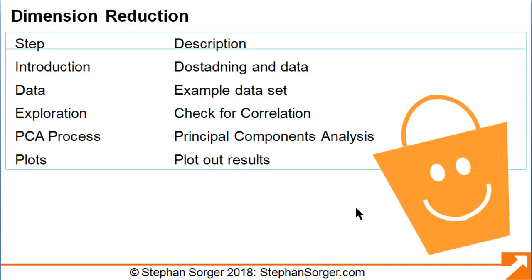In this presentation, I'll take you through some basic steps for dimension reduction using R, including introducing dimension reduction and how it's similar to Döstädning, introducing the sample dataset we'll use for dimension reduction, exploring it to find possible correlations in the data and its variables, executing the principal components analysis (PCA) in R, and plotting out the results to show how well PCA works.